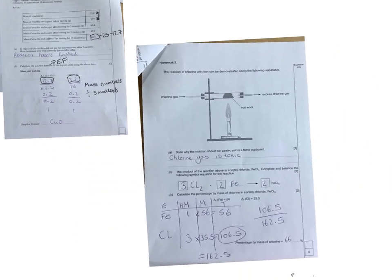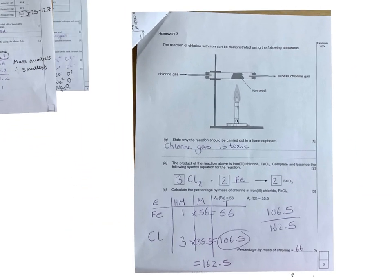Final question in this little homework booklet. The reaction of chlorine and iron can be demonstrated using the following apparatus. Chlorine gas state the reaction should be carried out in a fume cupboard. Chlorine gas is toxic. Complete the reaction above is iron chloride. Iron 3 chloride, complete the balanced equation for this reaction. So chlorine always exists in a pair, it's diatomic. Iron exists naturally on its own. And then we had to balance it out.